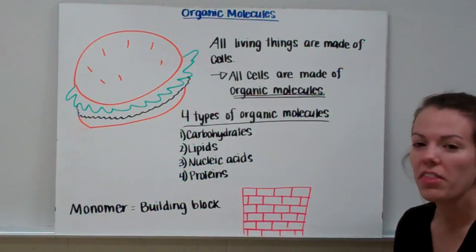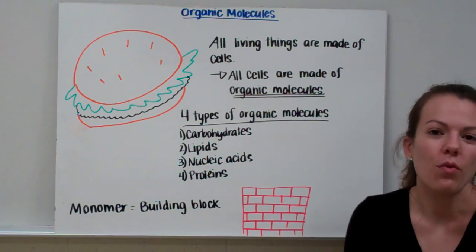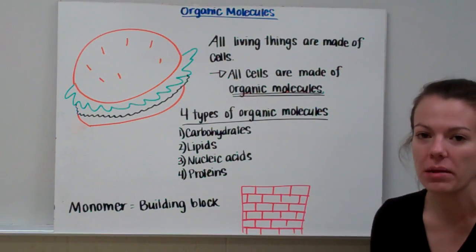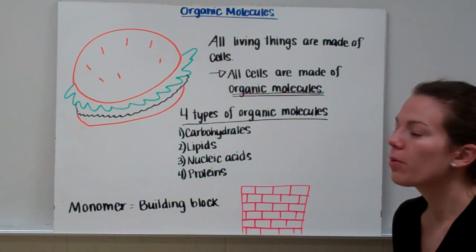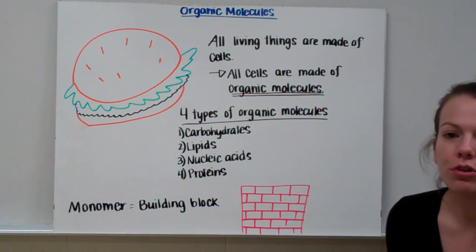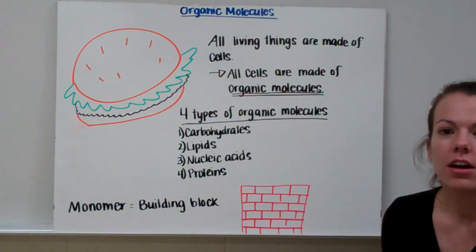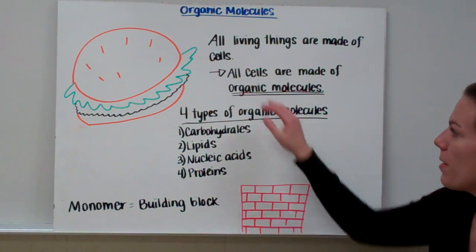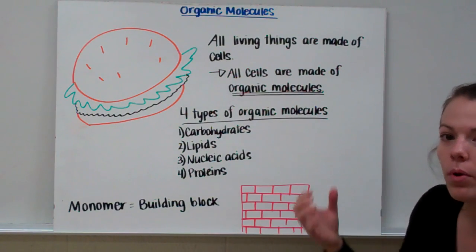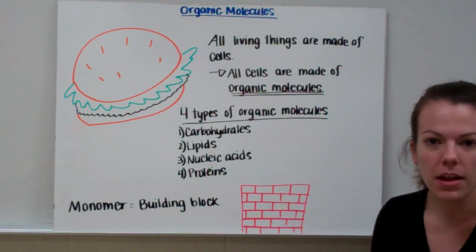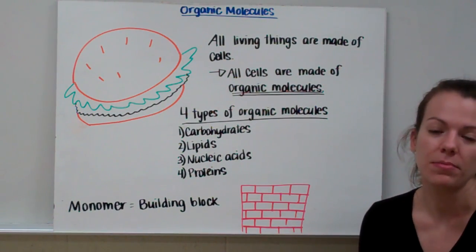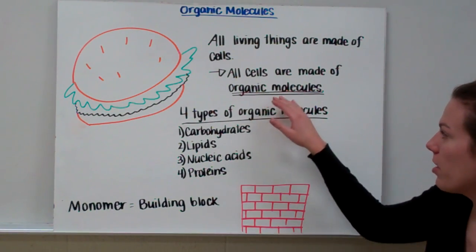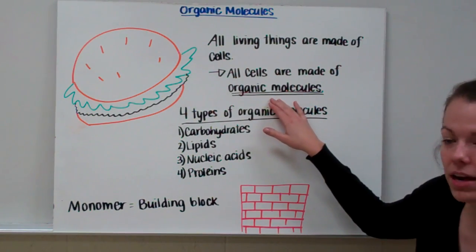This is Mrs. K here with a discussion of organic molecules. If you've ever eaten different types of foods, you might be familiar with the food pyramid or food groups. And just like your food comes from living things, we know that all living things are made of cells. You might wonder, what are those cells made out of? All cells are made out of something called organic molecules — that's what cells are comprised of.